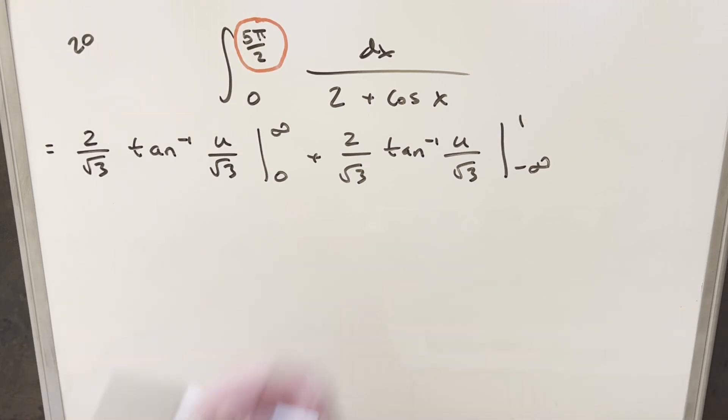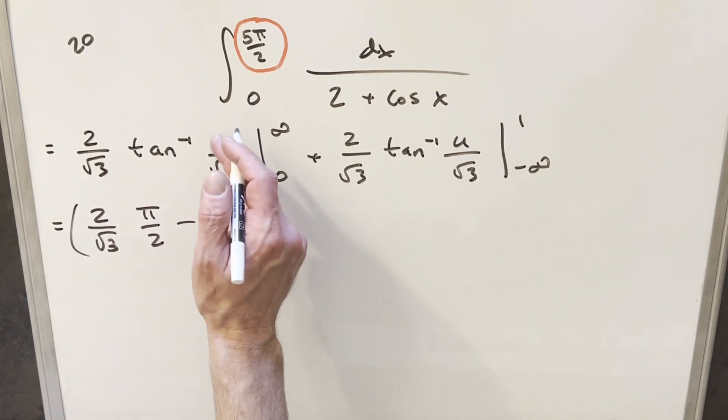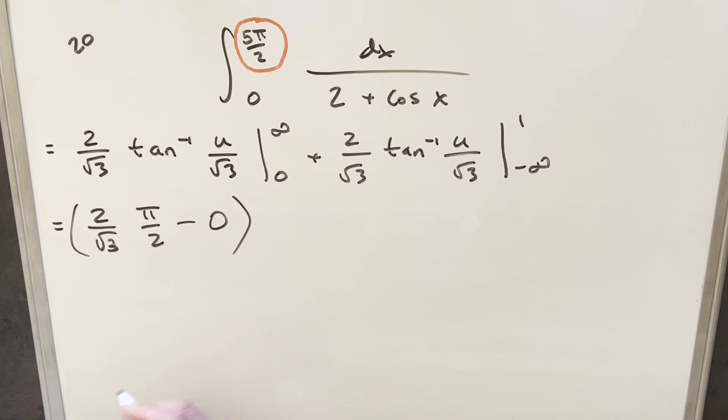Okay, now let's just go ahead and evaluate this. So when we plug in infinity here, we're evaluating arctan at infinity over square root of 3. Arctan of infinity is going to be π over 2. So for this first piece, we're going to have 2 over square root of 3 times π over 2. And for the second part, when we evaluate arctan at 0, this is just going to be 0.